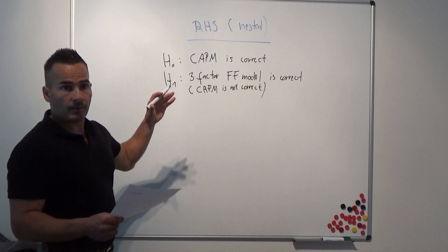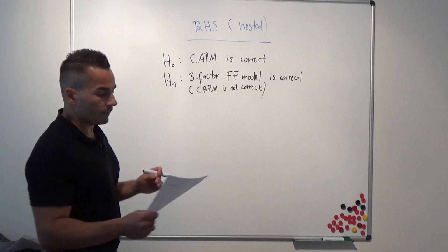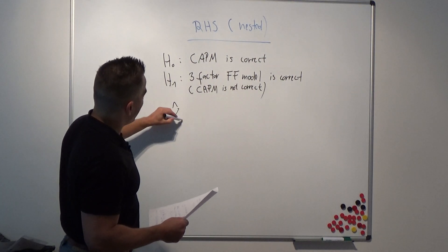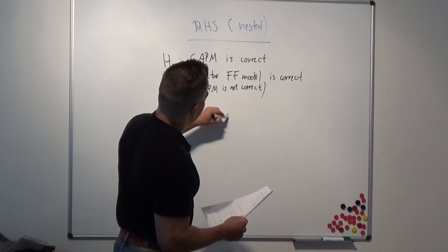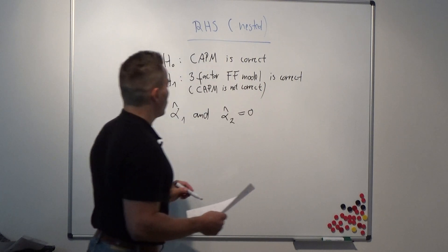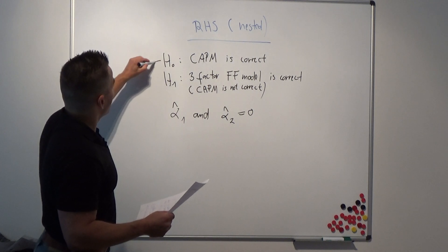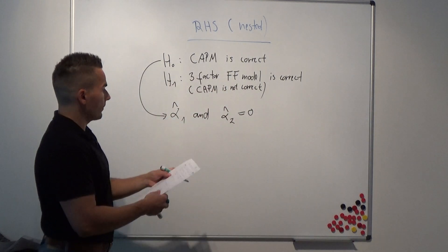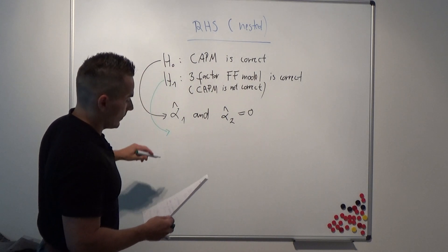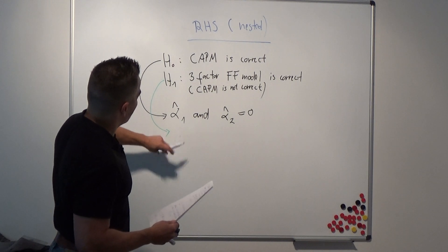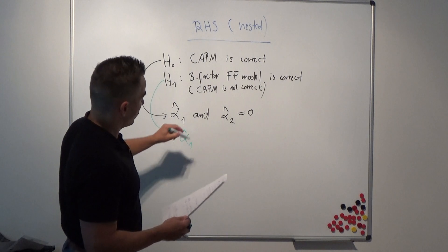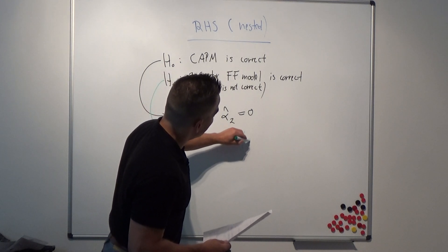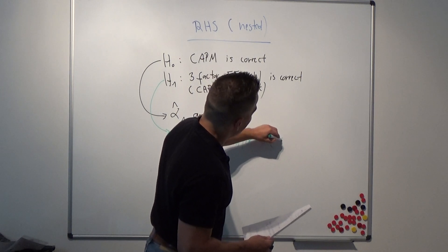Let's say we have the same setup with two test assets, so we have two alphas. If the CAPM is correct under the null hypothesis, then alpha-hat-1 and alpha-hat-2 are both equal to zero. The alternative hypothesis would apply if either alpha-hat-1 is not equal to zero, or alpha-hat-2 is not equal to zero.